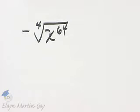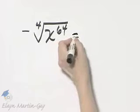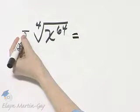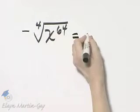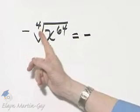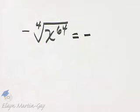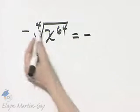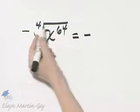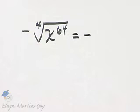Let's simplify this radical expression. I will begin by rewriting this negative sign since it's outside the radical expression. Then I want to simplify the fourth root of x to the 64th power. You may have noticed by now that when it comes to working with powers and indexes, it's really a matter of a division process.